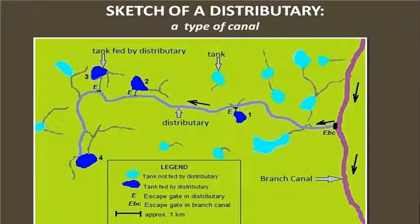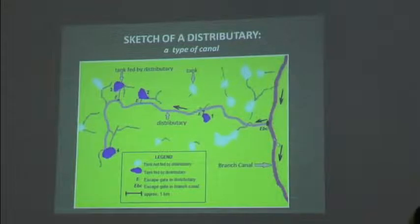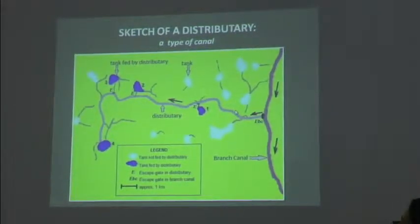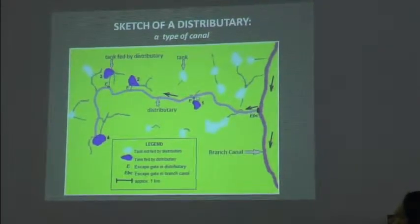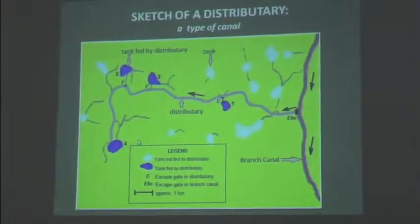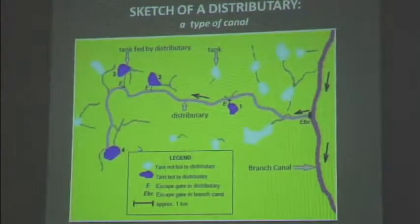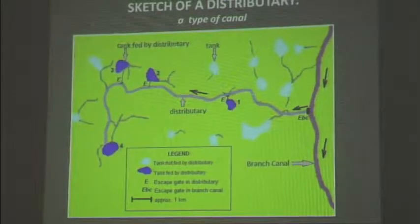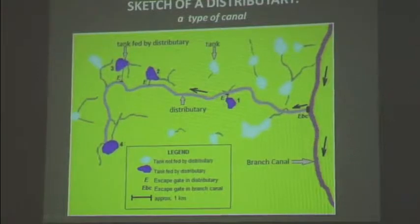Having seen that much about canals, let's get an idea of where we are. This is the distributary we are talking about, and the pictures we have seen are about this distributary. This is what is called the branch canal. The branch canal will release water — when this escape gate is raised, water is collected from this system; when it is closed, there is no water flowing. This distributary is supposed to release water to tanks numbered 1, 2, 3, and 4 — these are what are called irrigation tanks. This particular distributary is supposed to feed these four tanks.